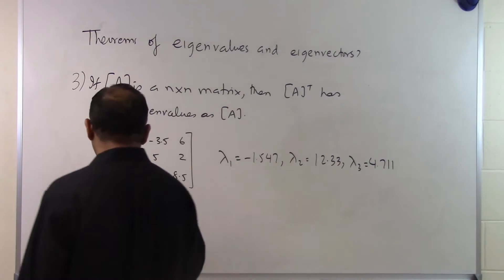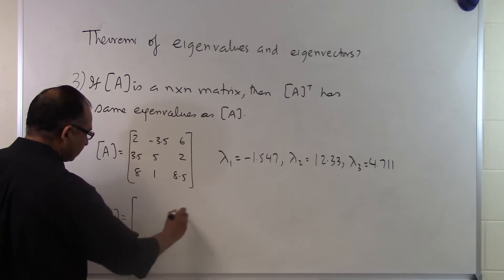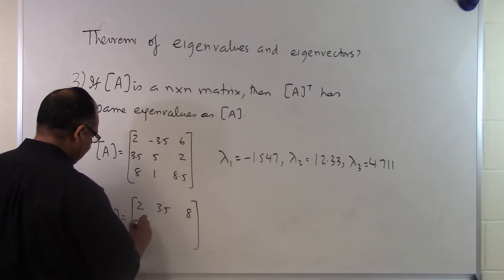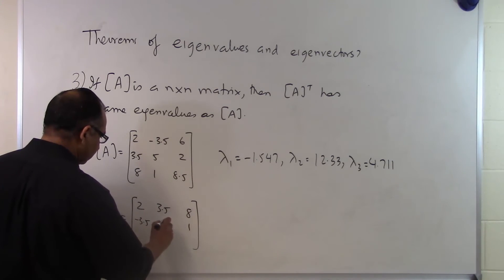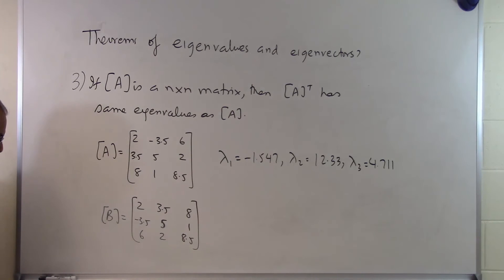Now if somebody gave me another matrix like this one: 2, 3.5, 8, minus 3.5, 5, 1, 6, 2, 8.5, and gave me a matrix like this one.